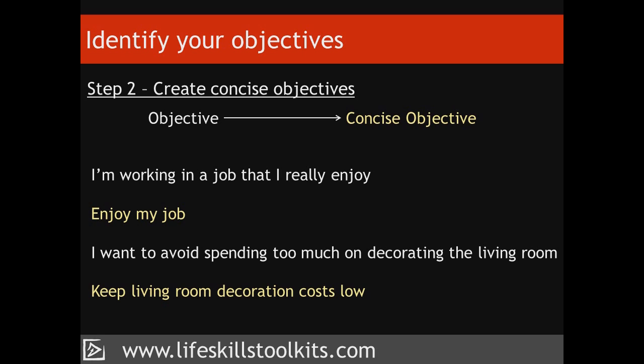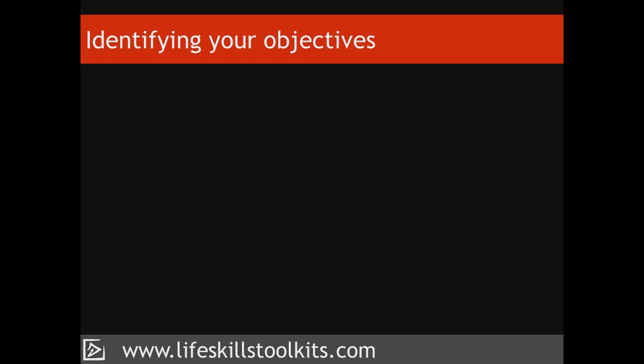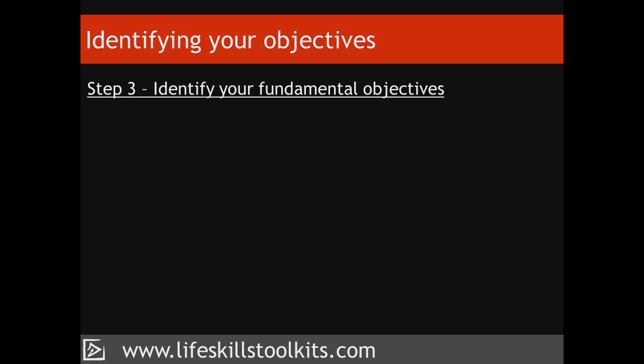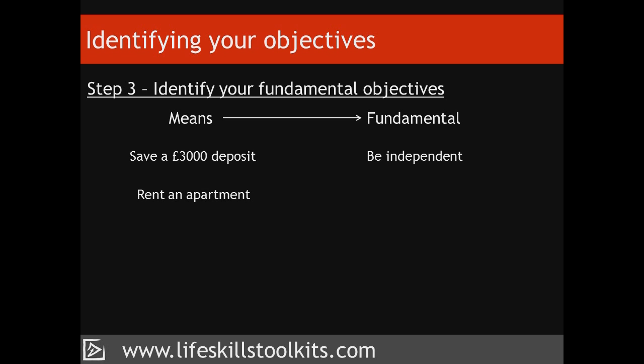Having concise objectives will help you with Step 3, which is to identify what are called fundamental objectives. There are two kinds of objectives: means objectives and fundamental objectives. A means objective is a way of achieving your fundamental objective. For example, if you live at home with your parents, consider these three objectives: Save a £3,000 deposit; Rent an apartment; Be independent. The first and second objectives — saving a deposit and renting an apartment — are the means of achieving the third, being independent, which is the fundamental objective.